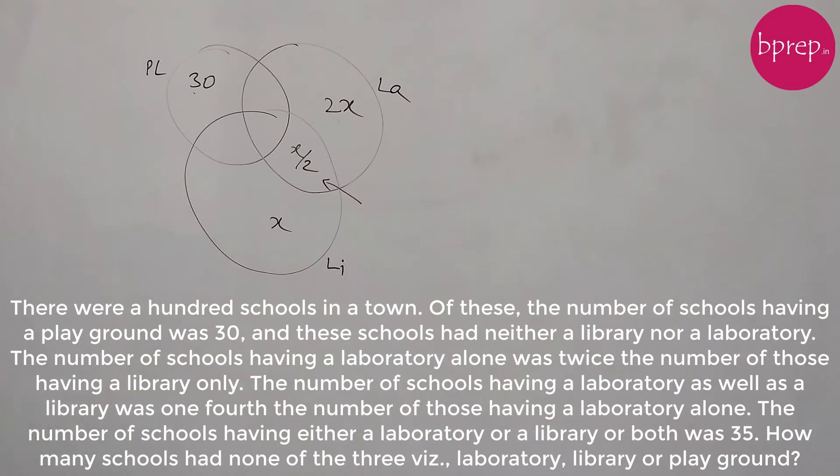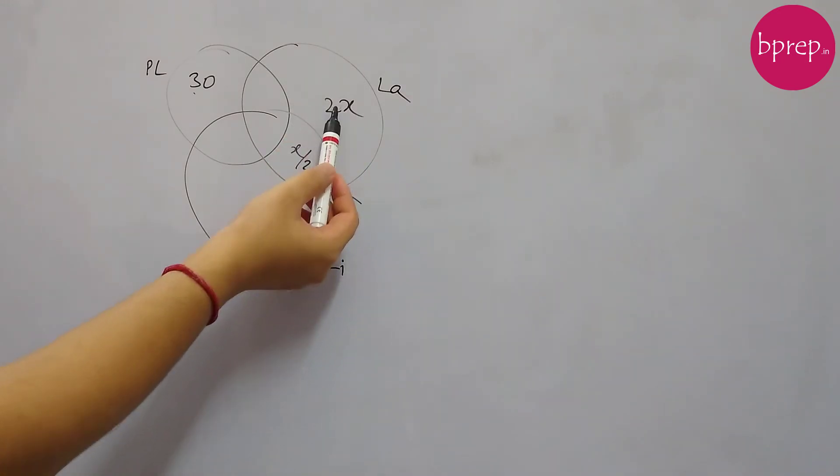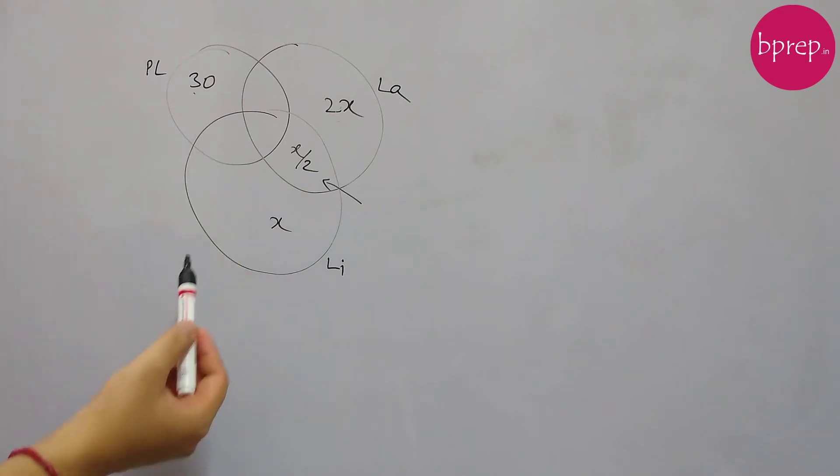So now the number of schools having either a library or a laboratory or both was 35, so it is given that sum of these either library or laboratory or both is 35. So this is very clear 2x plus x plus x by 2, 3.5x is 35, so x is 10.